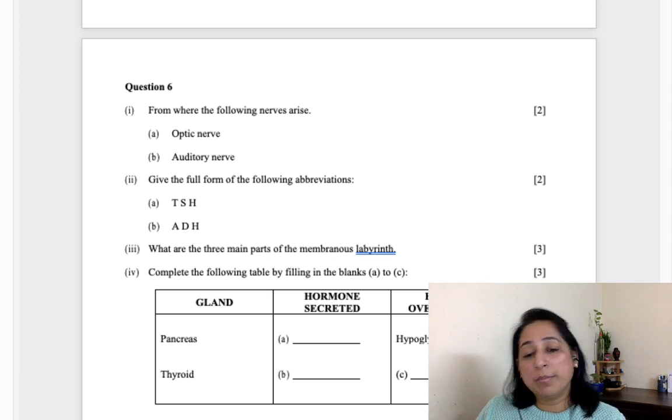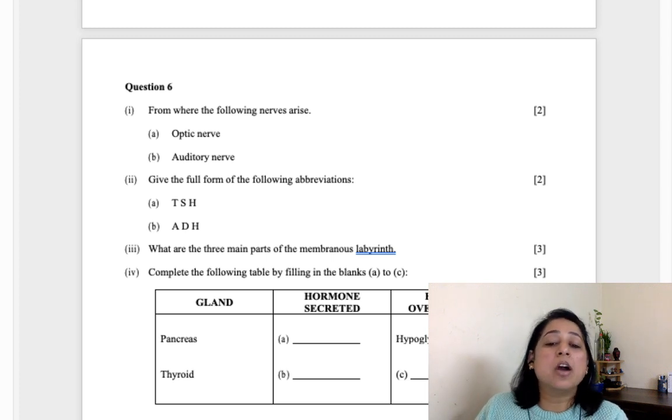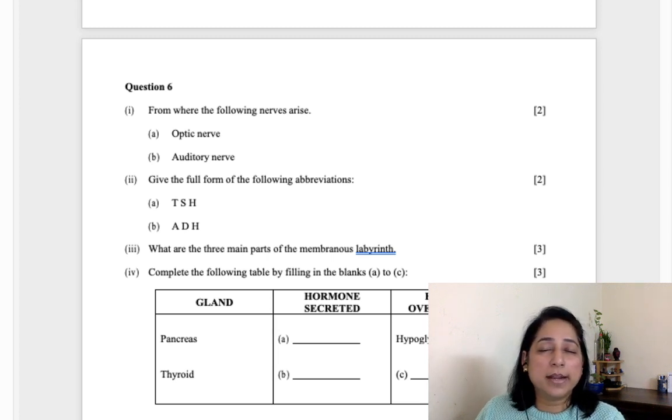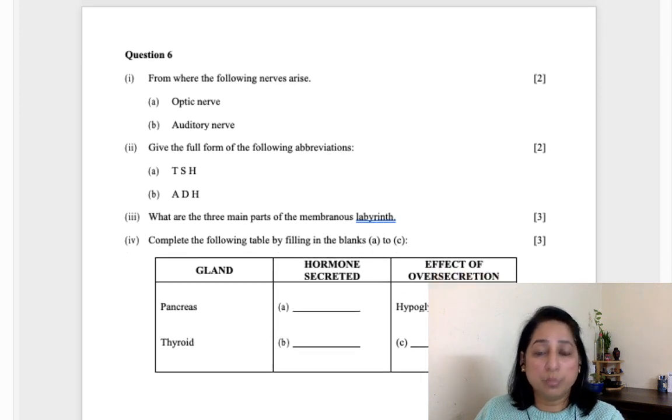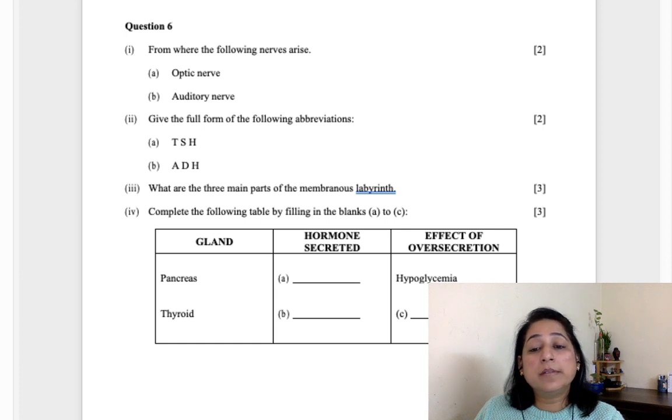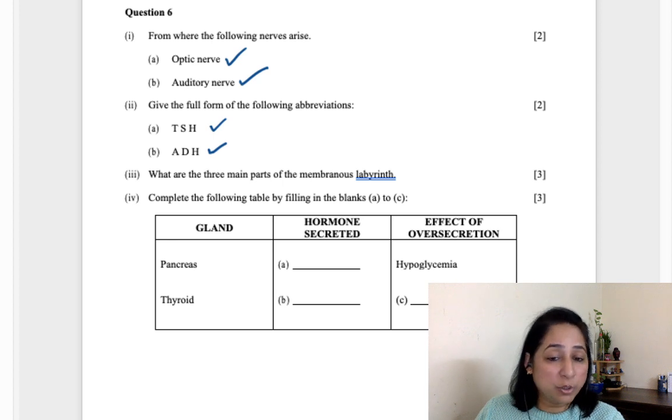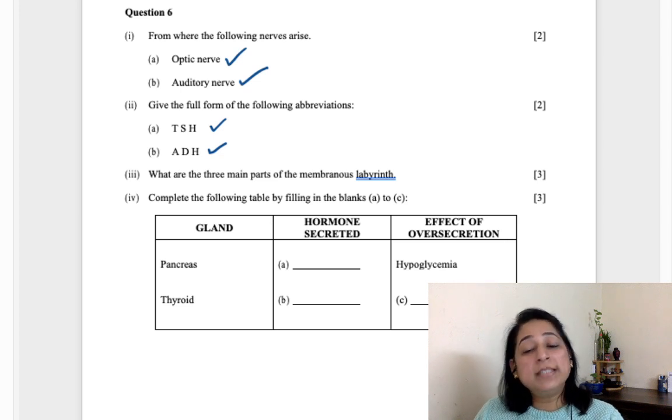Fourth question: what are hormones? Name two hormones secreted by pituitary. Hormones are proteinaceous chemicals which are produced in our body and are responsible for carrying out multiple functions in the body. Two hormones secreted by pituitary gland: ADH, GH, TSH - these are all hormones secreted by pituitary. For this you need to learn the table given in your book in endocrine system. From where do the following nerves arise? Optic, auditory. Give the full forms - abbreviations are important. TSH is thyroid stimulating hormone. ADH is anti-diuretic hormone, responsible for controlling the amount of water which passes in the urine.